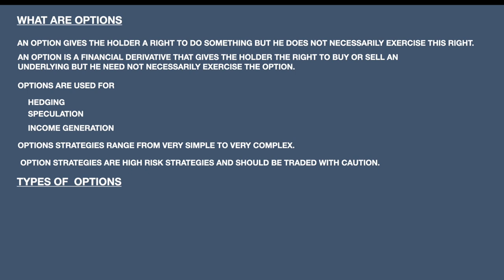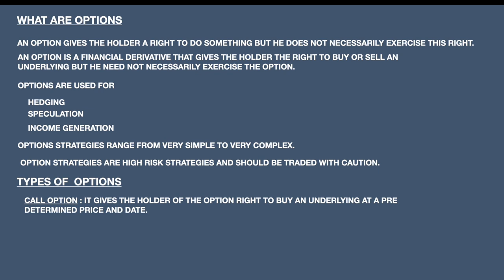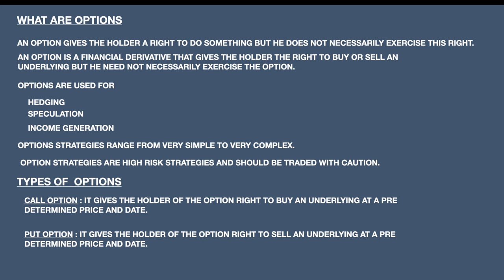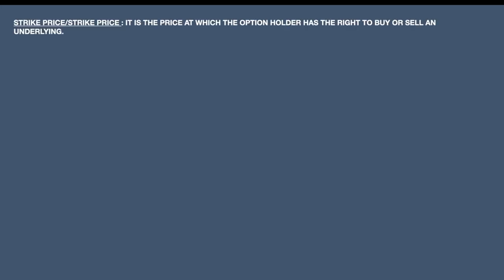Options are of basically two types. One is a call option. The call option gives the holder the right to buy an underlying at a predetermined price and a predetermined date. What is a strike price? Strike price is nothing but the price at which the option holder has the right to buy or sell an underlying. Strike price may not be the current market price — it can be anything. If the current market price is 100 rupees, the strike price can be 80, 90, 100, or 120. That is called the strike price, and we should not confuse it with the current market price.